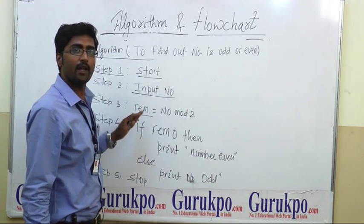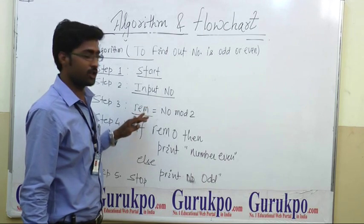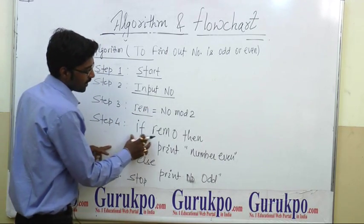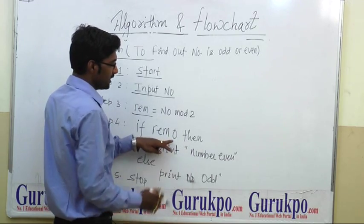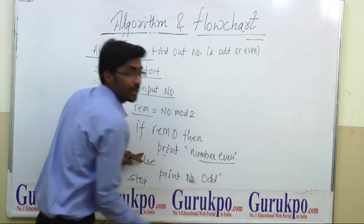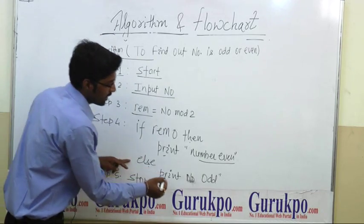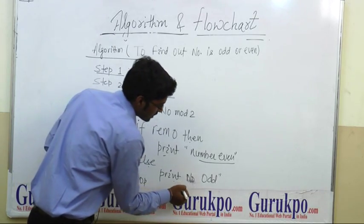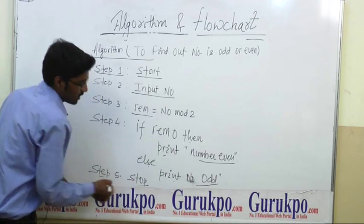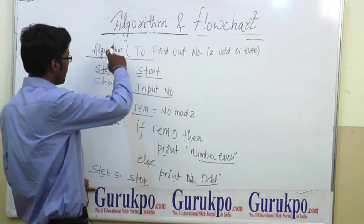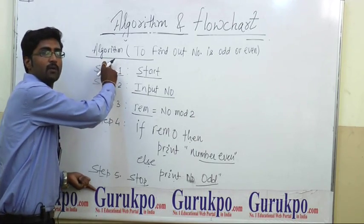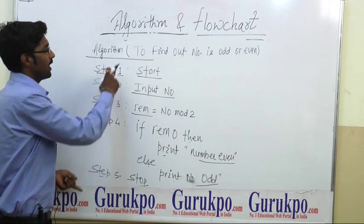If the remainder of any number is equal to zero, that is step four — if the remainder is zero, then print 'number is even.' Else, print 'number is odd.' And step five — stop. This is the simple sequential representation of a program, and it is known as an algorithm.